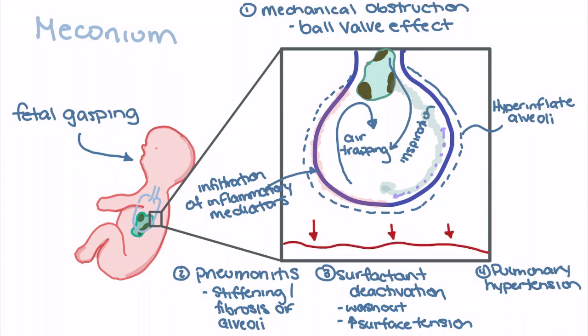As a result, we see constriction and increased pressure within the pulmonary arteries. Additionally, we see fibrosis of the pulmonary tissue leading to widespread or long-lasting pulmonary hypertension. This can have serious consequences for right-sided heart function for the neonate.